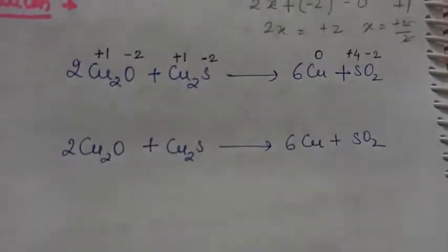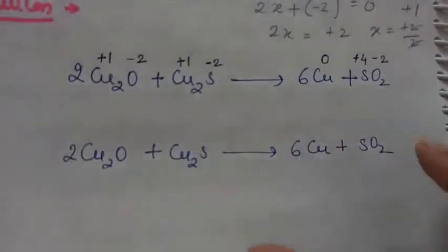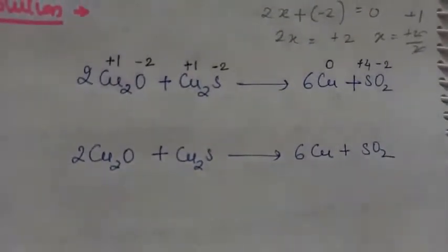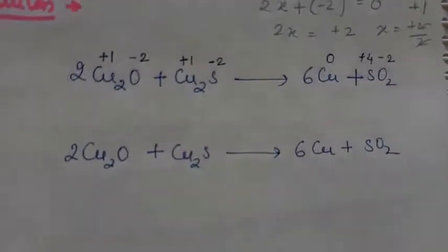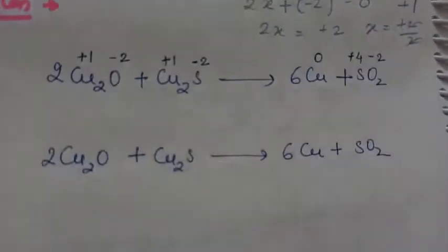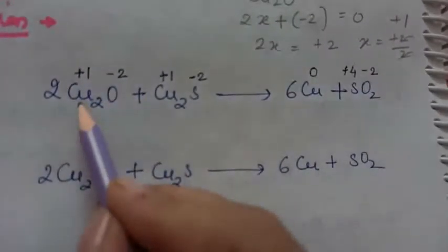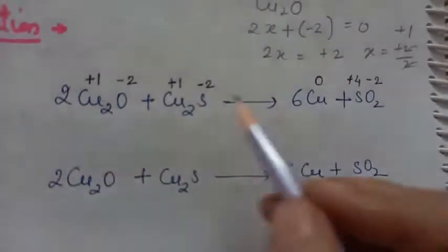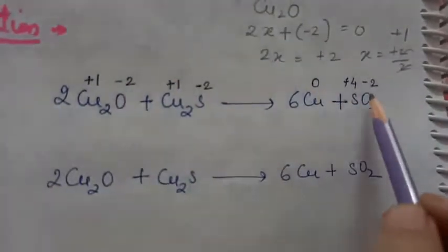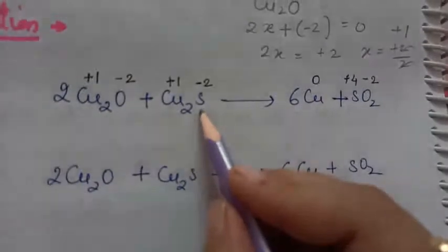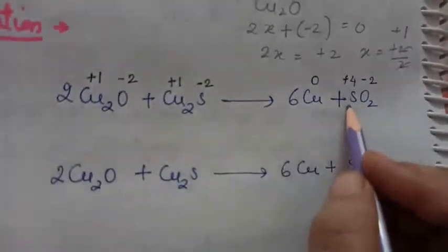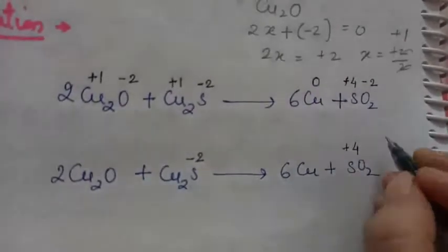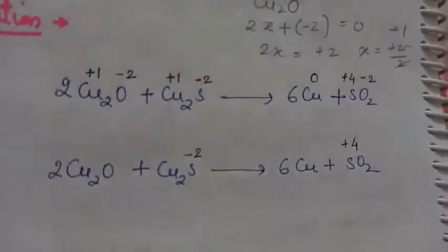Now in the second step, we identify which species have changed oxidation state. Copper on the left-hand side is +1 and on the right-hand side is 0. Oxygen remains at −2 on both sides, so there is no change for oxygen. Sulfur changes from −2 to +4 oxidation state. So the two species that have changed are copper and sulfur.